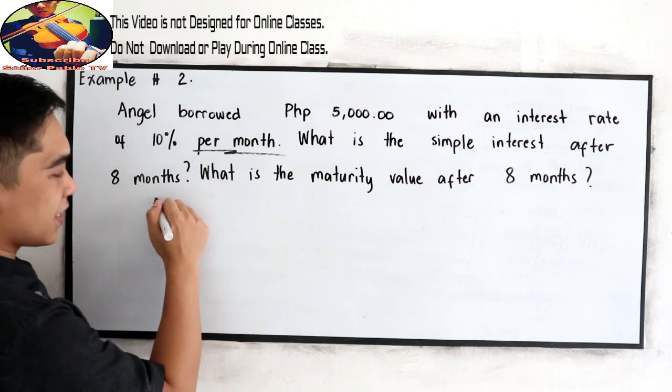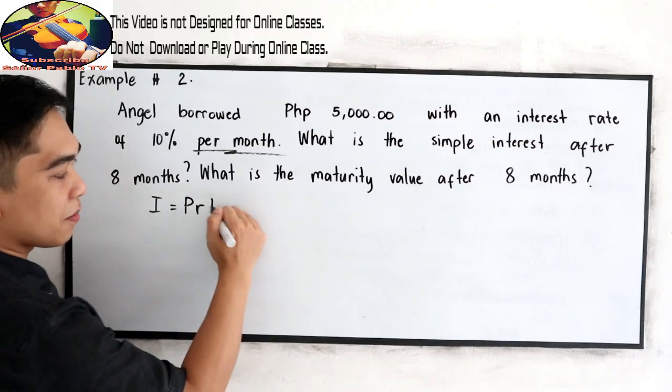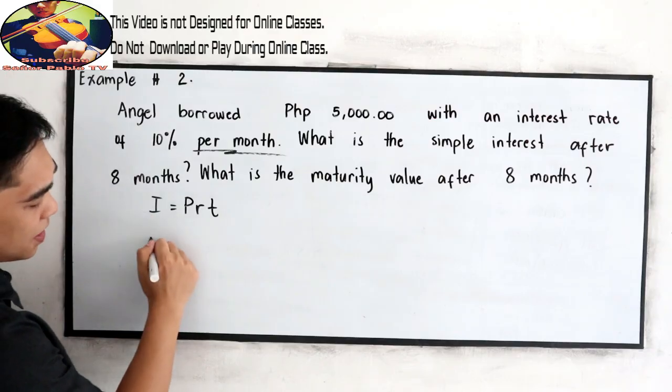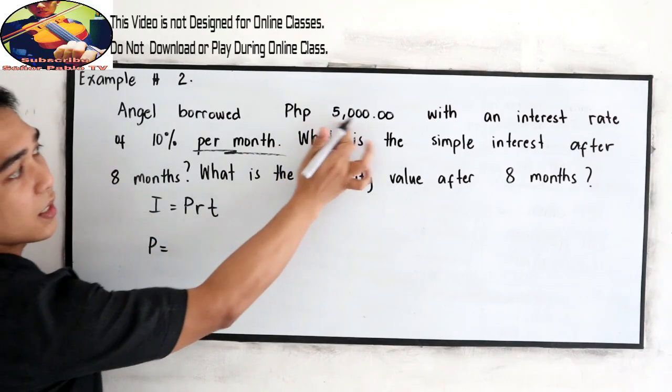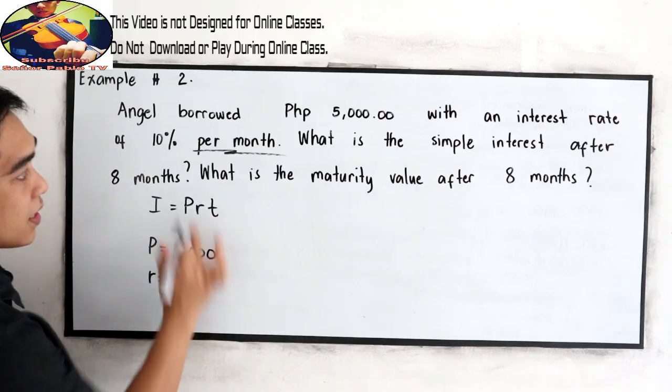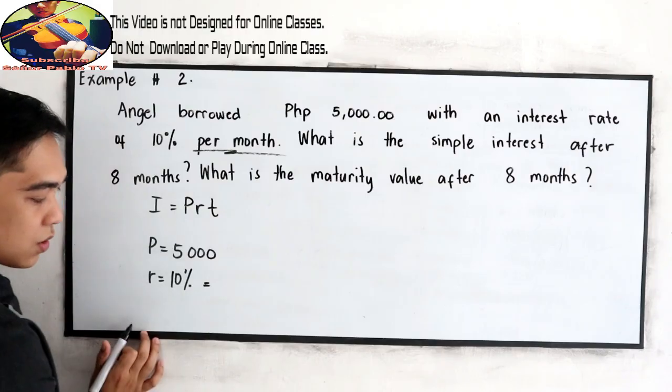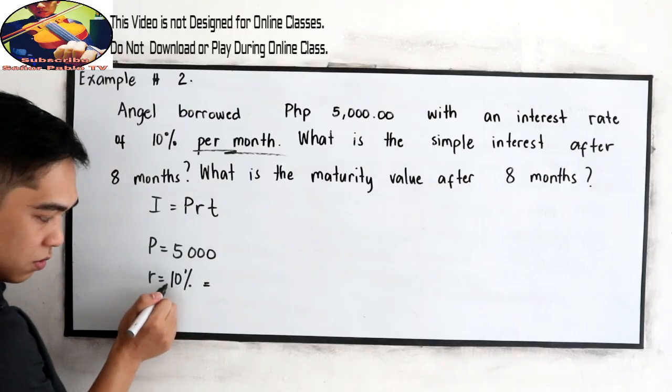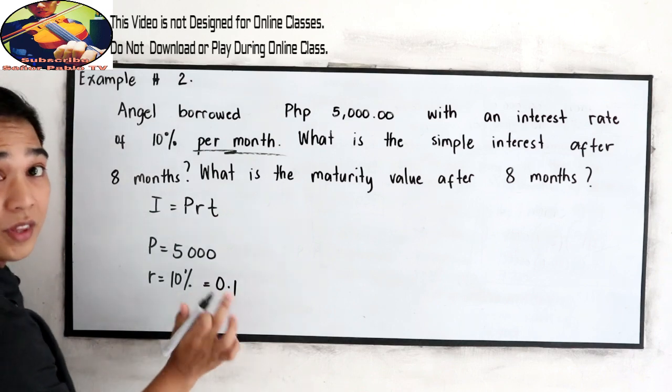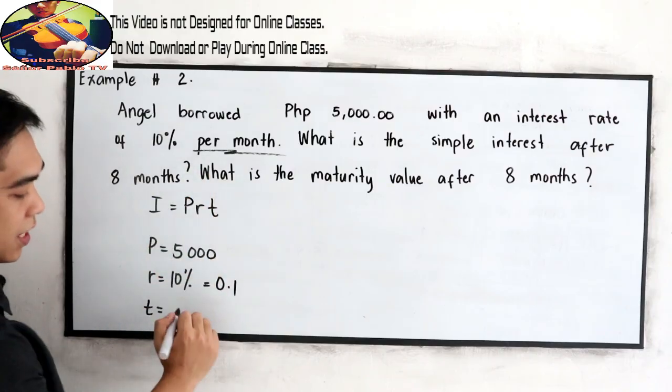So let's check. Our formula is interest is equal to principal times the rate times time. So our principal here is 5,000. Our rate is 10%. In decimal, that is equal to move to, to the left, 0.1 or 0.10. And our time is 8 months.